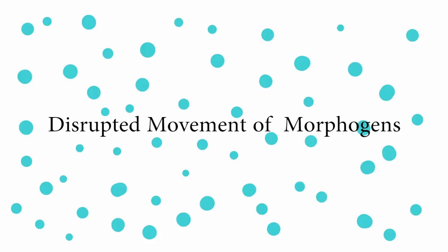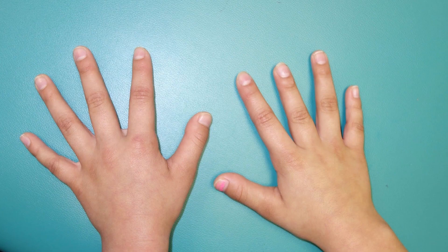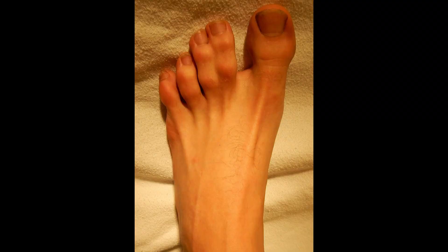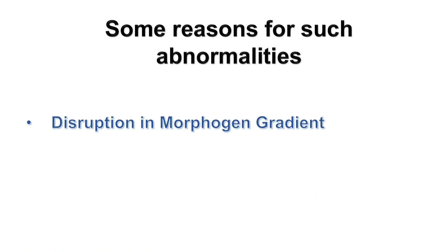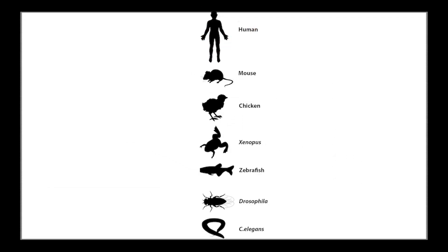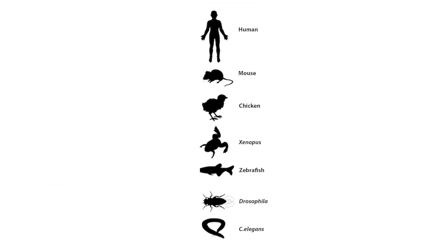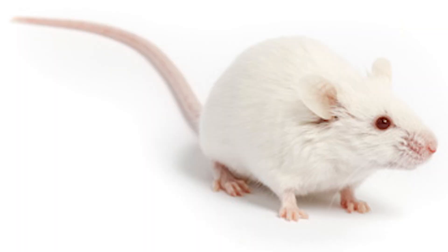But is this process of development an infallible one? When it disrupts, it brings up some abnormalities such as extra, short, or joined fingers, or a finger-like thumb. There are multiple reasons behind these defects, with disrupted morphogen distribution being one of them. Treating such abnormalities requires us to first understand how the system works. Experimenting on humans is not a feasible option, so model organisms are used.